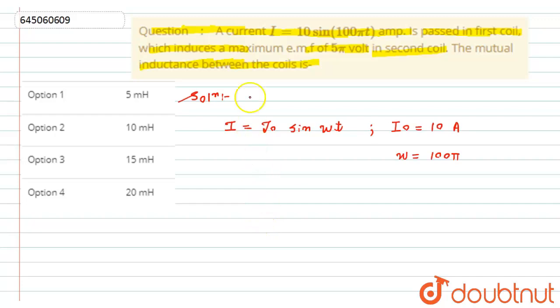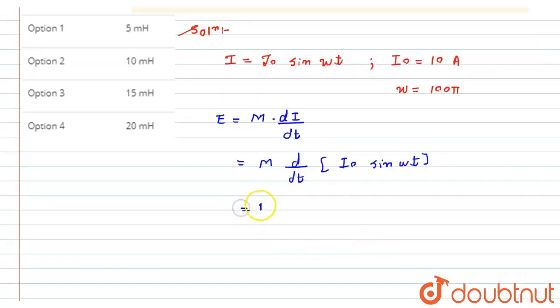Now to get the EMF, as we know the induced EMF in the second coil is given by E = M(dI/dt). According to our question, we have to find the differentiation of this I, that is I₀ sin(ωt). If we differentiate it, we get M times I₀ will be constant, so it will be taken out. Differentiation of sin(ωt) is cos(ωt) into derivative of ωt, which will be ω.